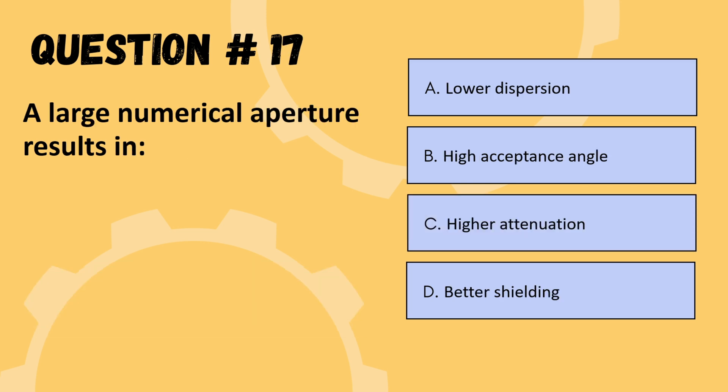Next question: a large numerical aperture results in — options are lower dispersion, high acceptance angle, higher attenuation, or better cladding. The correct option is B: high acceptance angle.